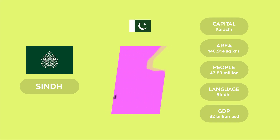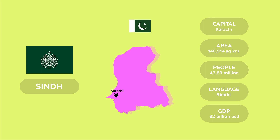Now we have Sindh. Sindh's capital is Karachi, which is the largest city in Pakistan. Sindh is the third largest province in Pakistan in terms of land area and the second most populated province of Pakistan. People speak Sindhi in Sindh. Sindh's GDP is $82 billion USD.